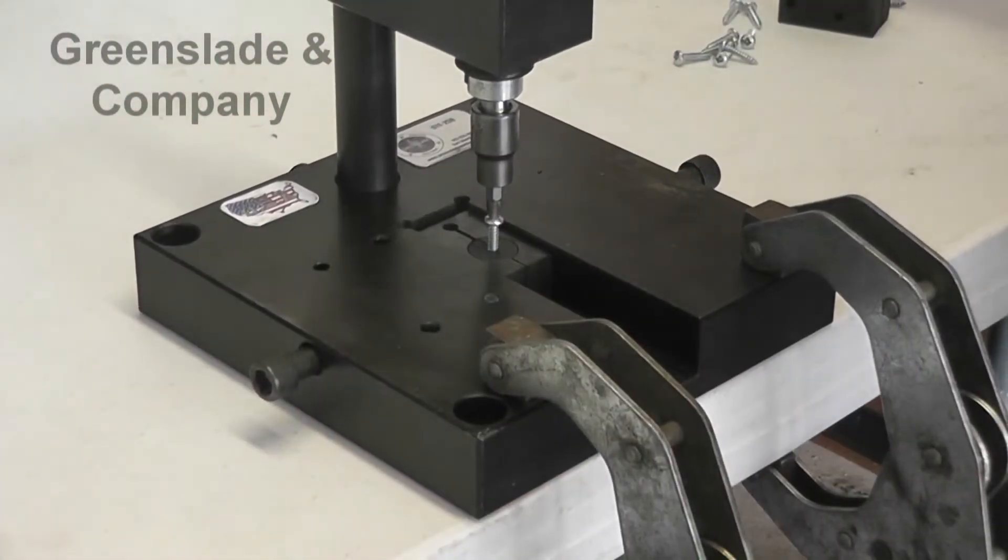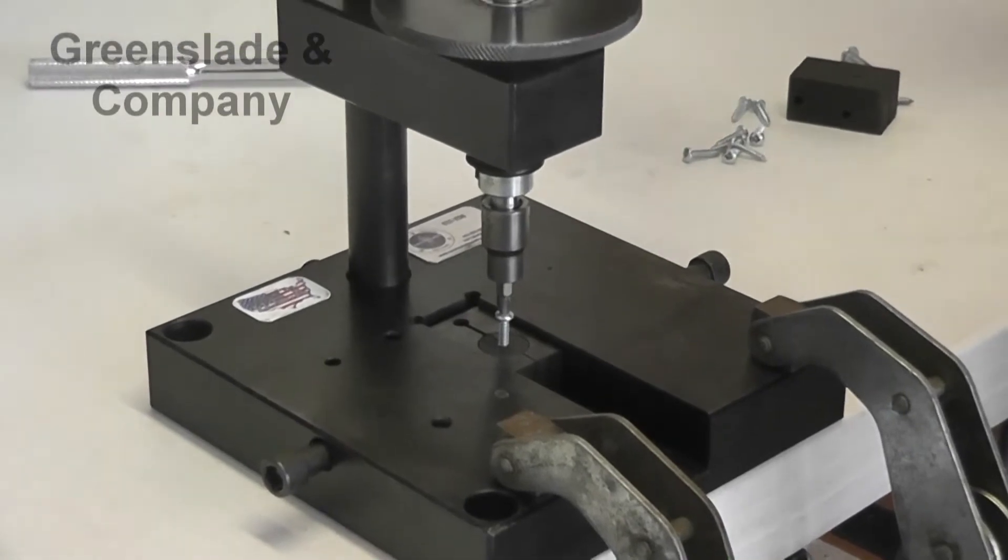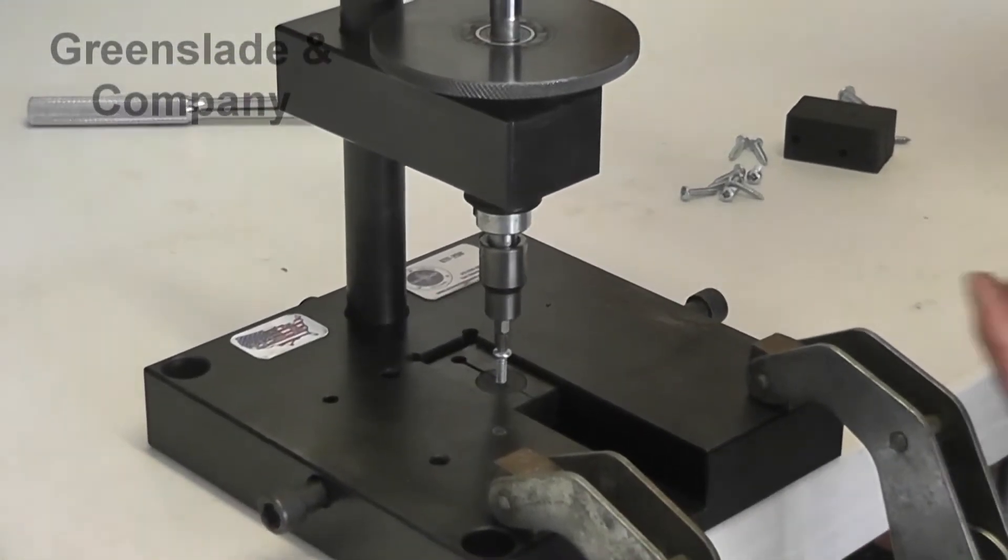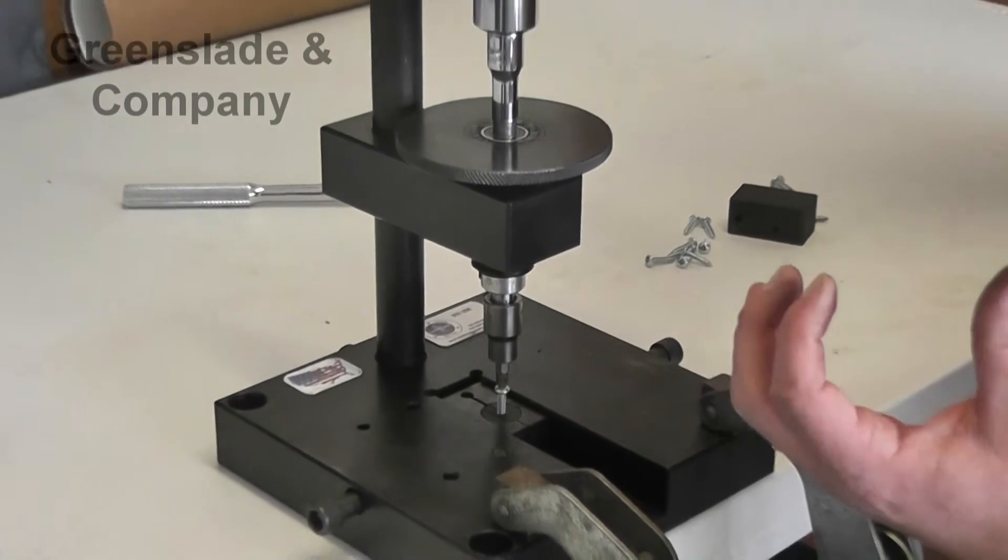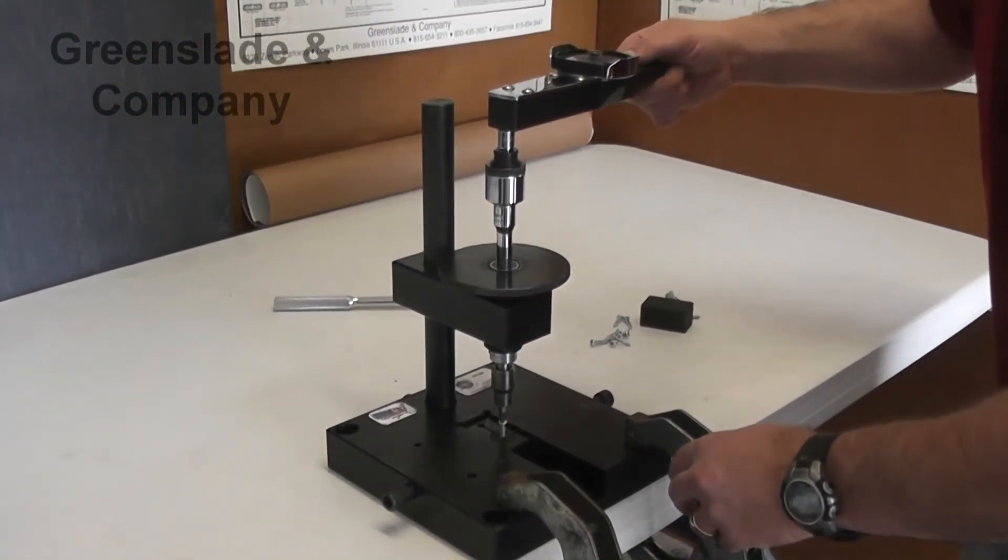Then you go ahead and tighten up your side clamps to make sure that you are properly clamping the thread. The idea is to not let the fastener twist while you are doing this. You want all the twisting to be in the shank of the screw. You don't want it to slip.